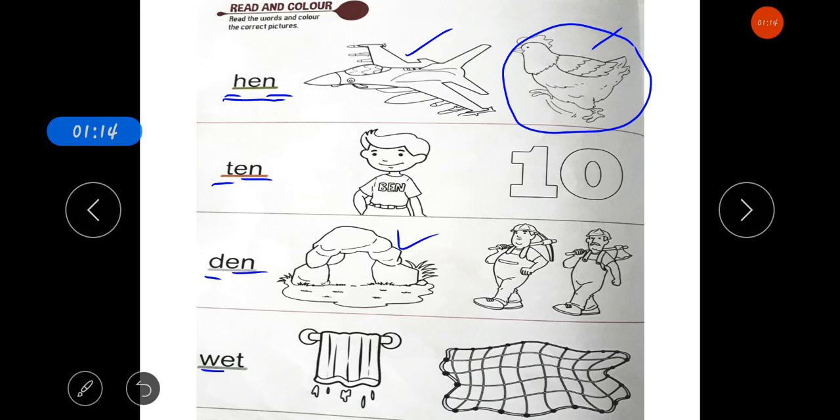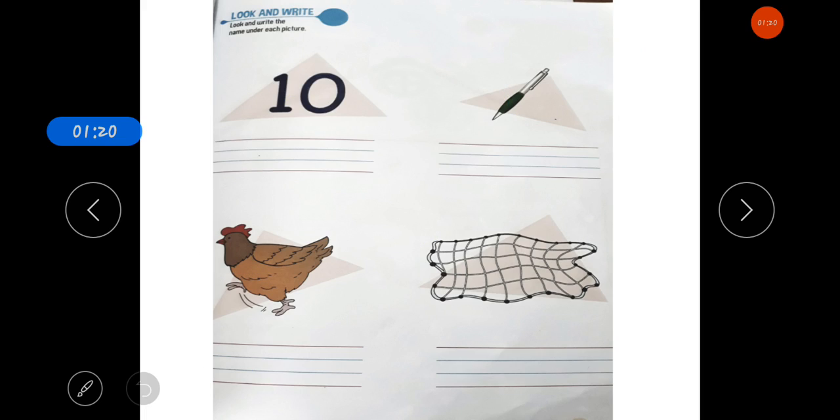Now, next is wet. You have to color wet. Clear? Now, the next worksheet is look and write.